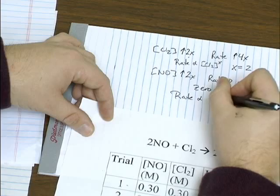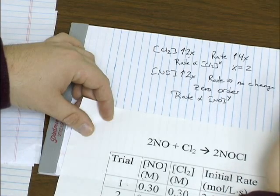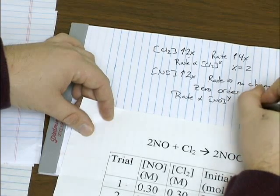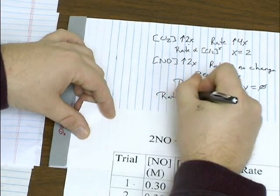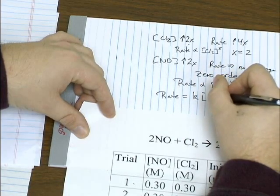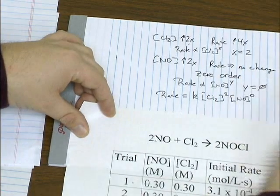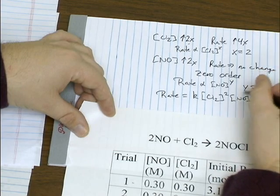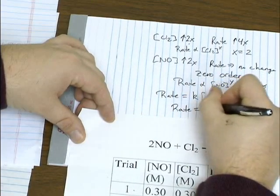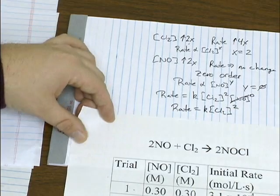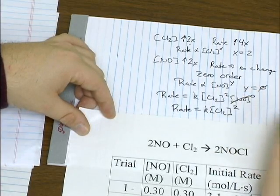In other words, if you try to set it up as a proportionality, or the rate is proportional to concentration of NO to some exponent Y, Y is equal to zero. So like before, we can put the two together. We'll go ahead and put in our rate constant. And anything raised to zero power is one. So we can rewrite it where it's just K times chlorine squared. And if it's zero order, we typically don't bother showing it in our rate law.